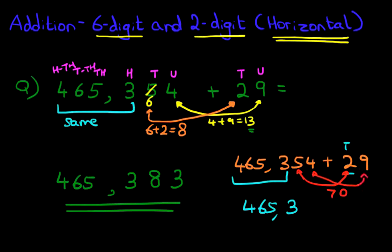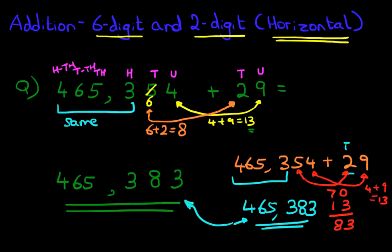We've got four over here, the units. Add the nine units over here. Four plus nine equals thirteen. So that becomes eighty-three. So we can write that down over here. Eighty-three. And this one over here is exactly the same as this one over here.